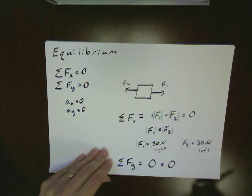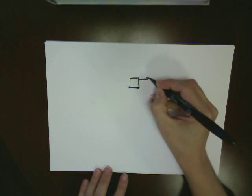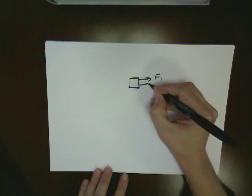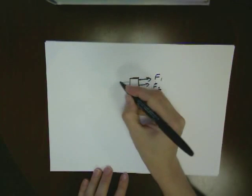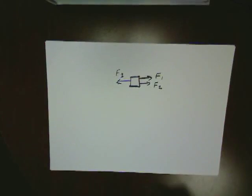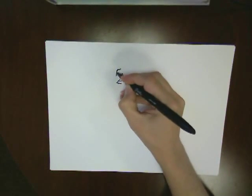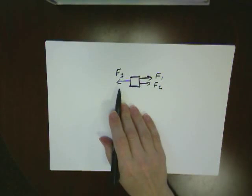Let's look at one more case, which sometimes confuses students. Let's say I have a box, I've got two separate forces pulling to the right, and one force pulling to the left. Students often take a look at this and say, oh no, that's not an equilibrium because I've got two over here and I've got one over here.